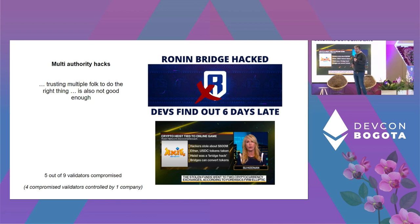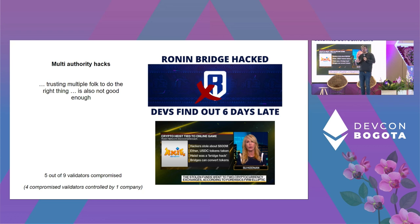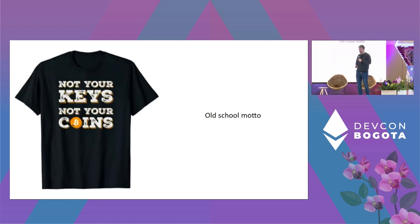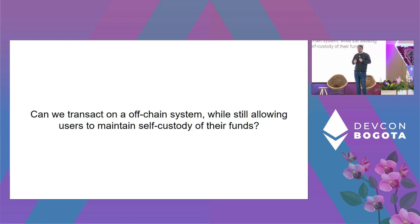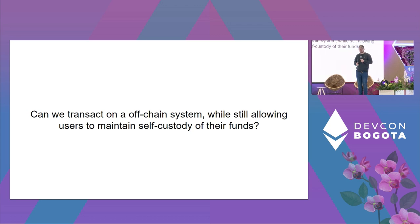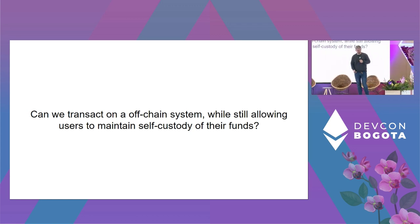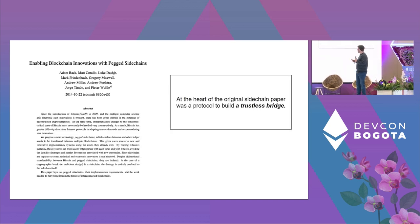Multi-authority bridges are a little better — more targets to hack — but the Ronin bridge had five out of nine validators compromised and lost funds, and in reality four of them belonged to one company. Over the past 10 years designing bridges, we've sort of forgotten our old motto: not your keys, not your coins. The question is: can we build and transact on an off-chain system while still allowing users to maintain custody and not have to trust the operator?